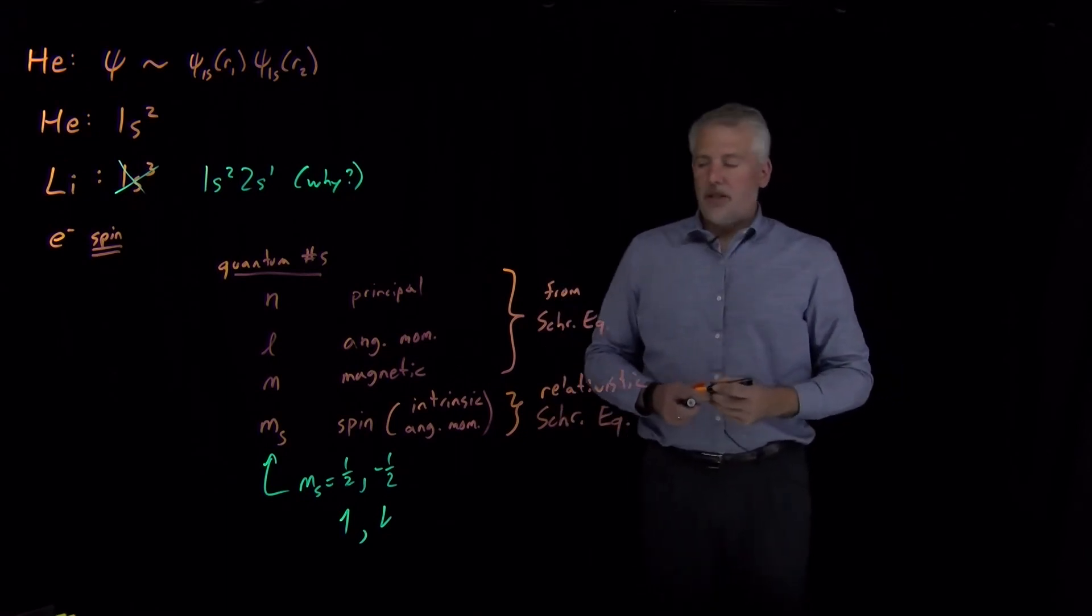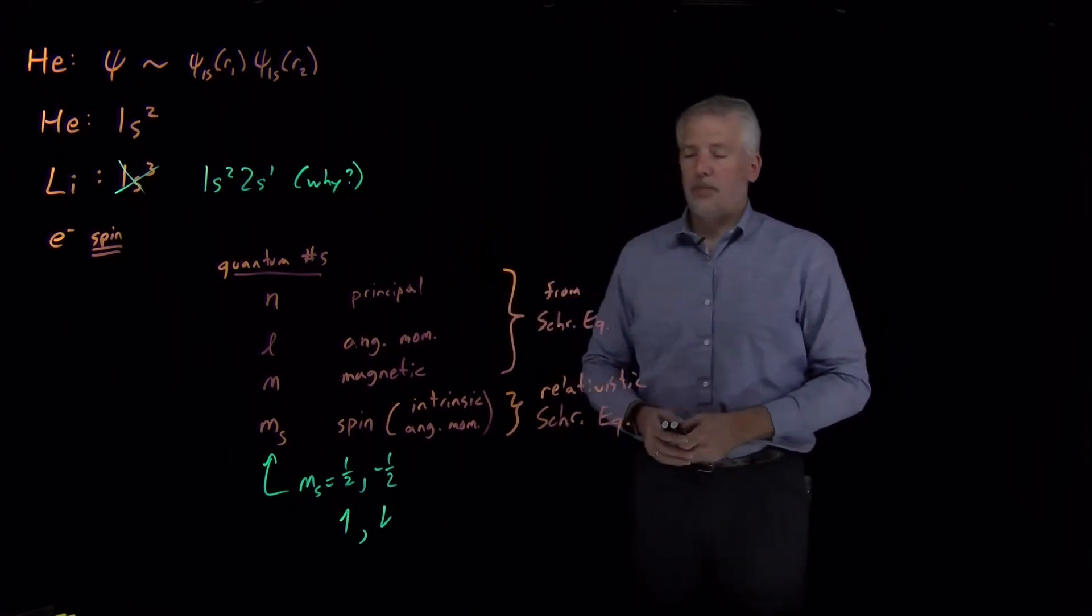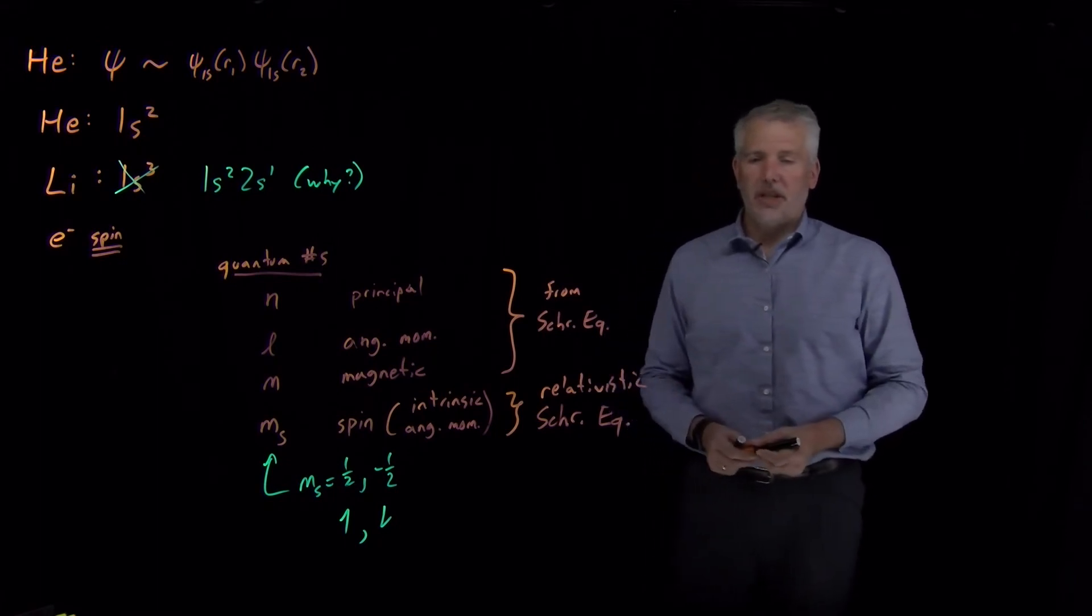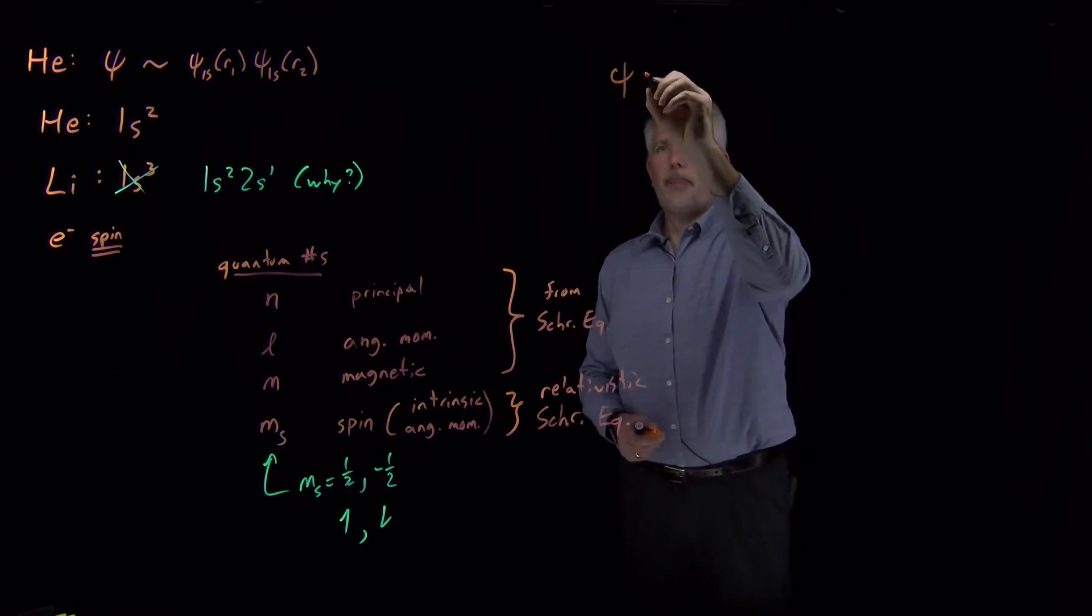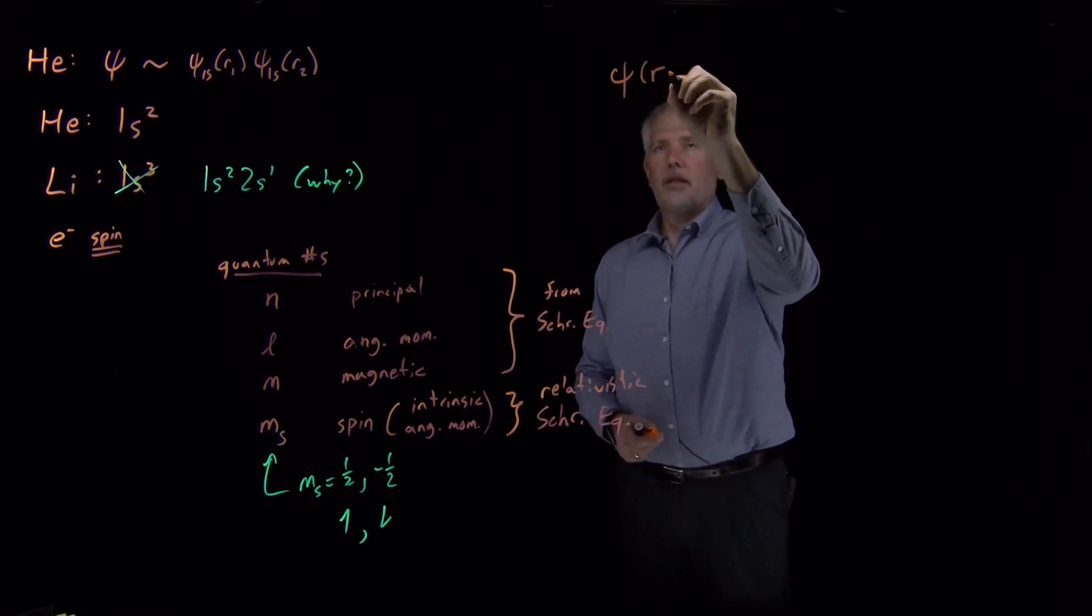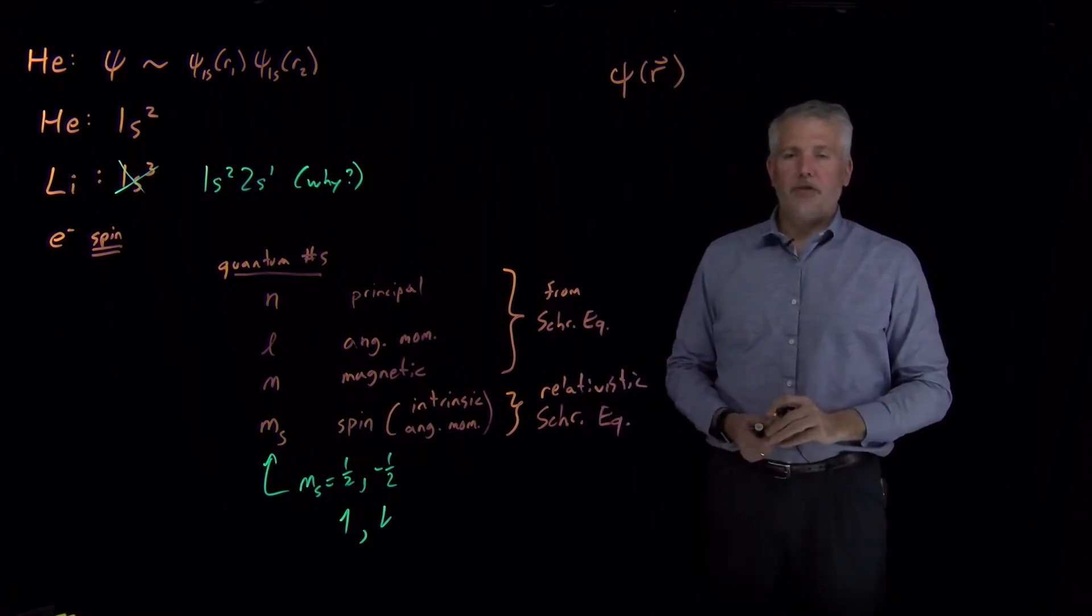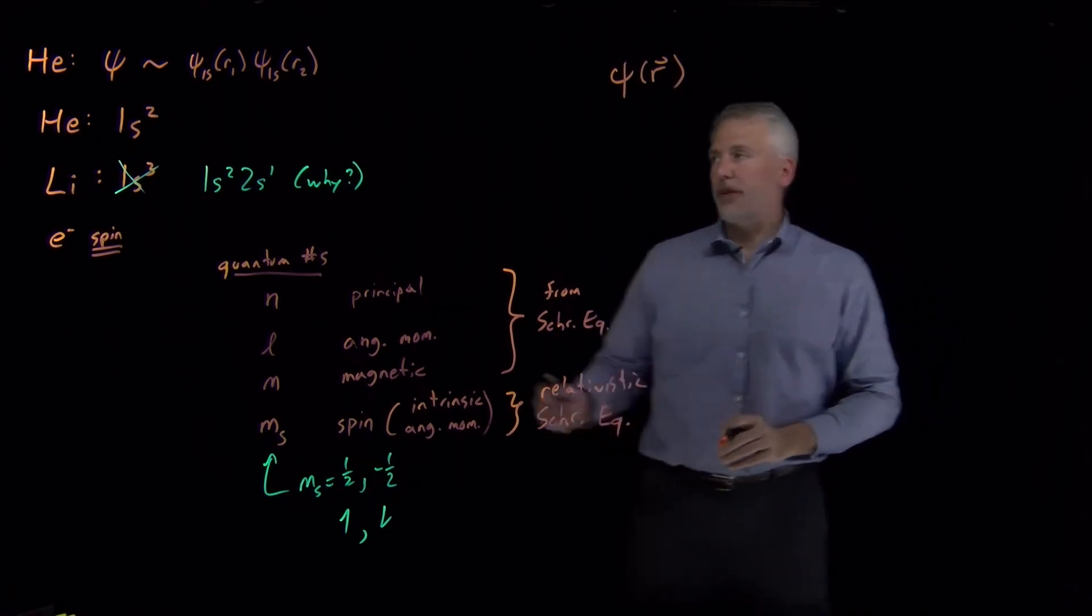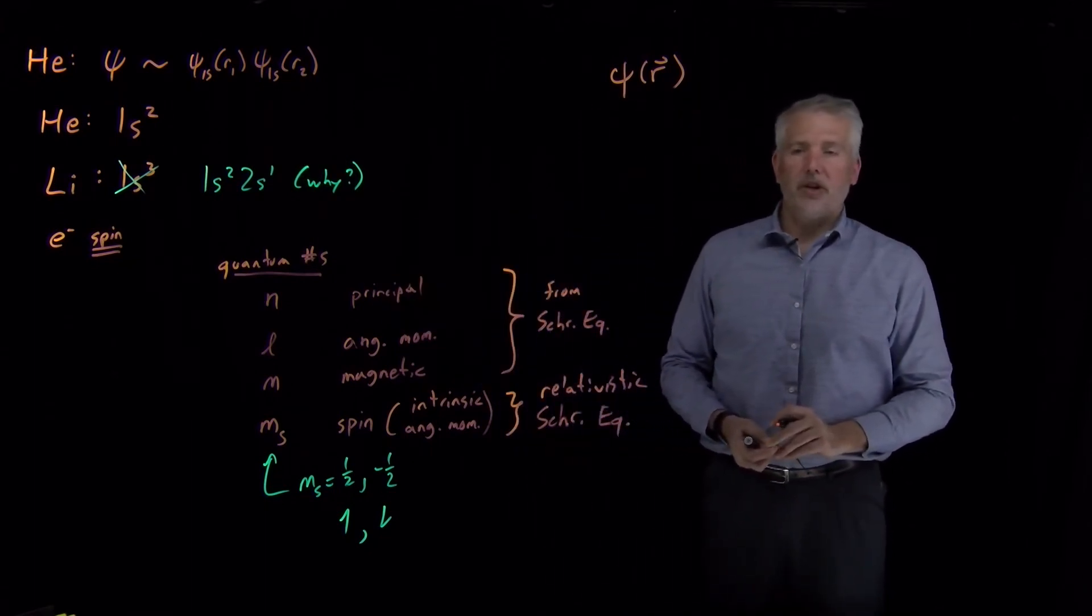The last thing to discuss about spin, so that we can begin to understand why lithium has the properties it does, the electron configuration that it does, is that when I write down a wave function—until now I've written a wave function as a property of spatial coordinates. A one-electron wave function will depend on the x, y, z, or the r, θ, φ coordinates of that electron.